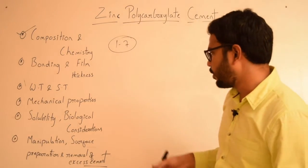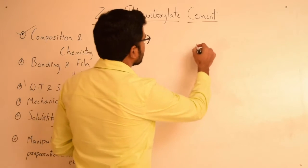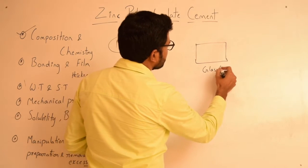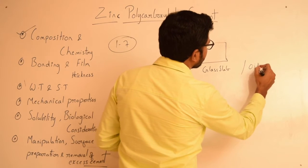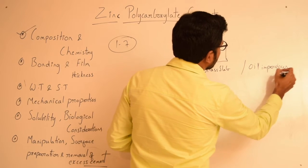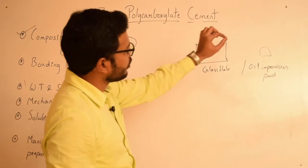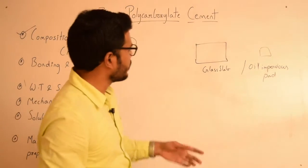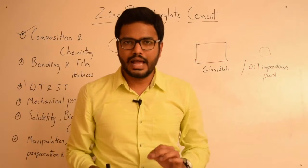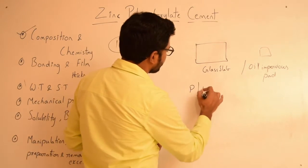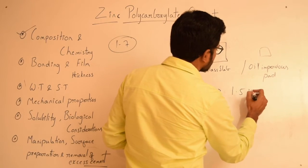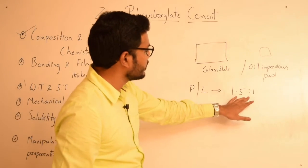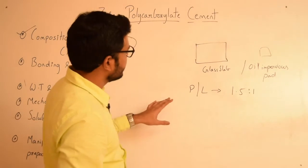For manipulative considerations of zinc polycarboxylate cement, a glass slab is preferred over an oil-impervious pad. The reason is that when liquid is dispensed onto an oil-impervious pad, there is a greater chance for water present in the liquid to be absorbed by the pad. The powder-liquid ratio for zinc polycarboxylate cement is 1.5:1, that is 1.5 parts of powder mixed with one part of liquid, which is the ideal ratio for luting consistency.